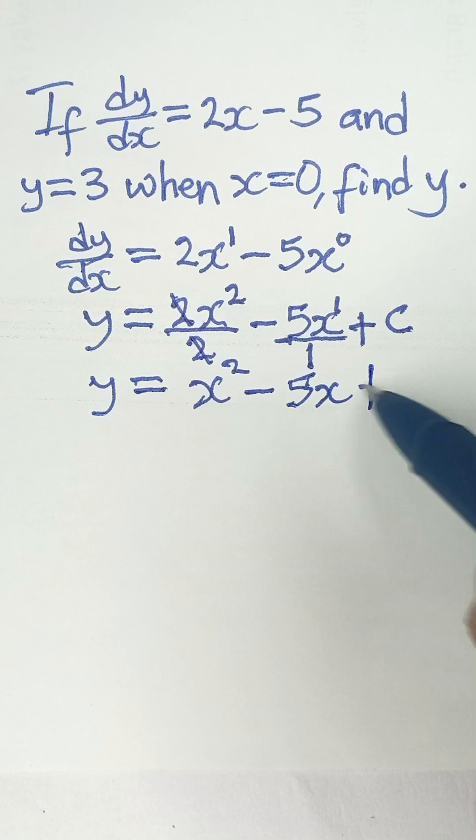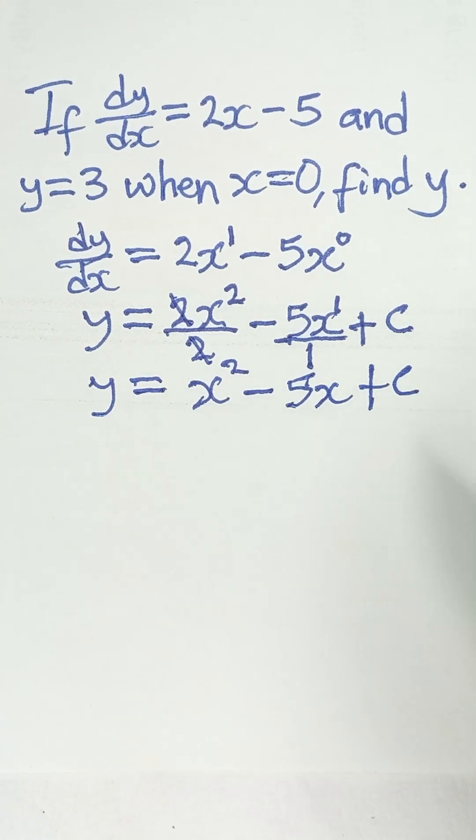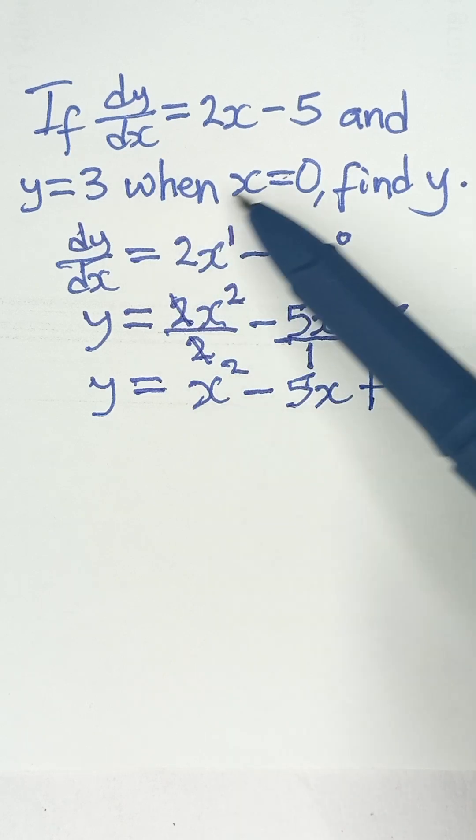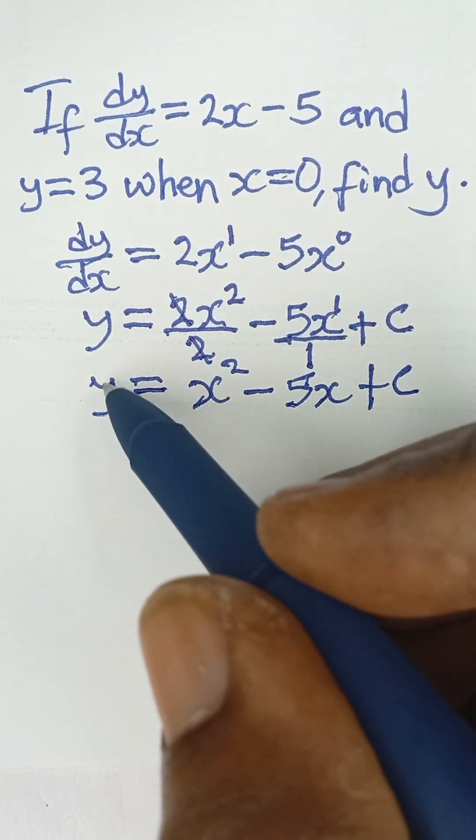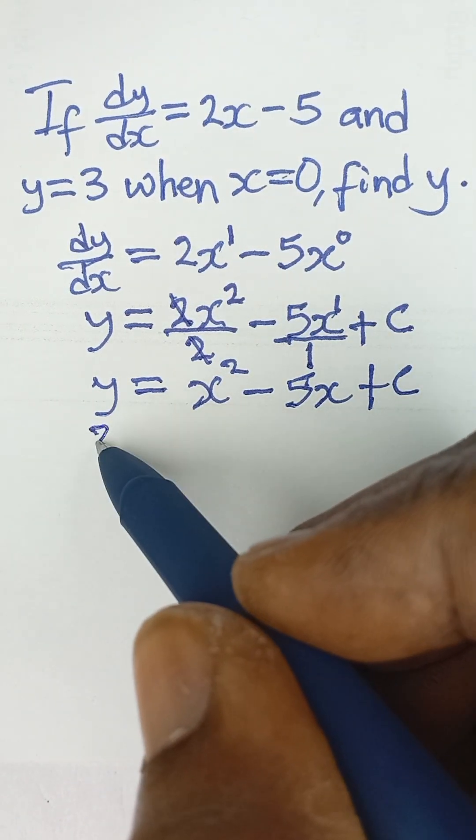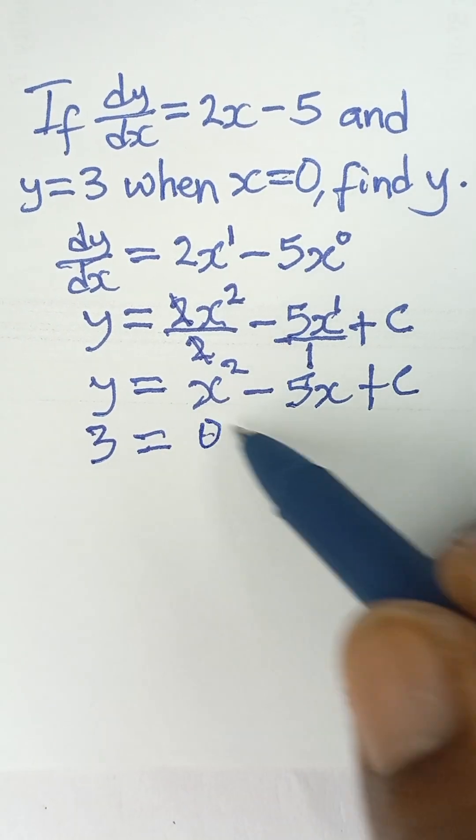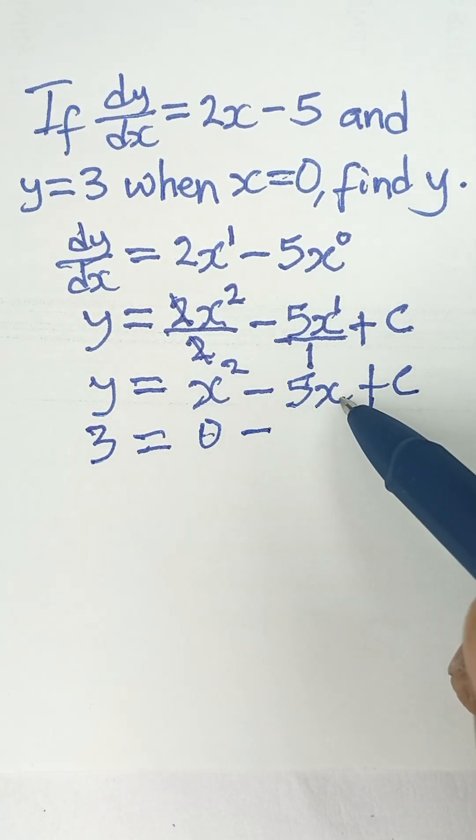Now we are going to get the constant c. We are told that from the equation, when y is equal to 3, x is 0. So we simply put 3 here for the value of y, and then we say x is 0. 0 squared will give us 0, minus 5 times 0 will also be 0, and then plus c.